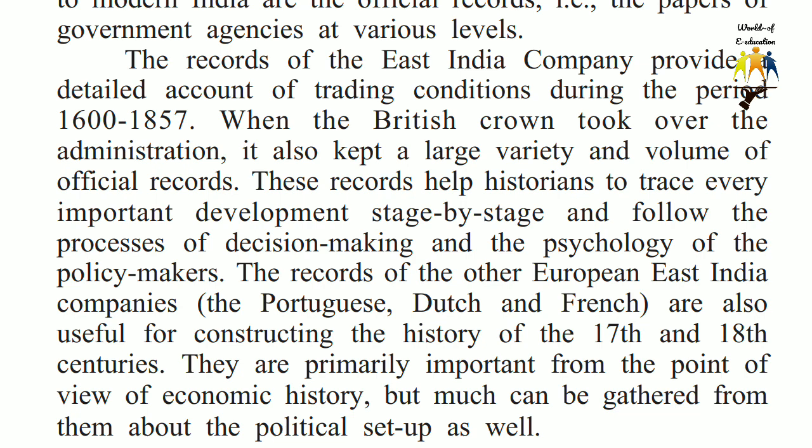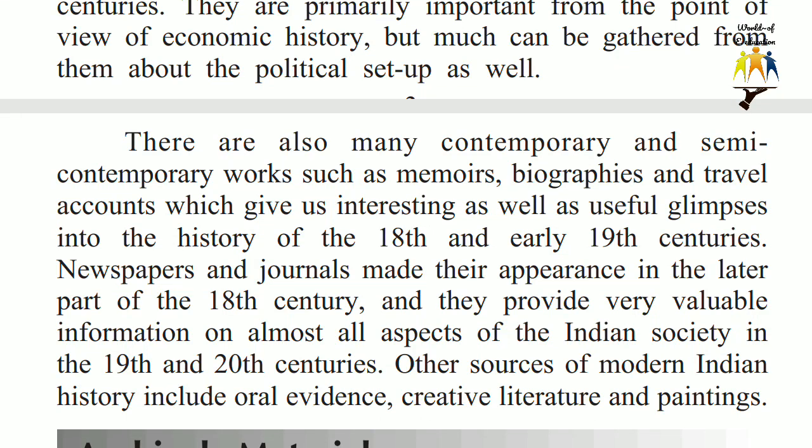They are primarily important from the point of view of economic history, but much can be gathered from them about the political setup as well. There are also many contemporary and semi-contemporary works such as memoirs, biographies and travel accounts which give us interesting as well as useful glimpses into the history of the 18th and early 19th centuries. Newspapers and journals made their appearance in the later part of the 18th century, and they provide very valuable information on almost all aspects of Indian society in the 19th and 20th centuries. Other sources of modern Indian history include oral evidence, creative literature and paintings.